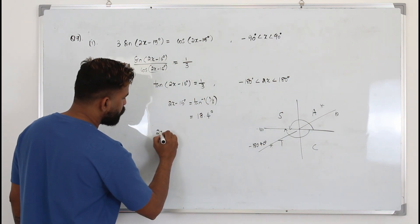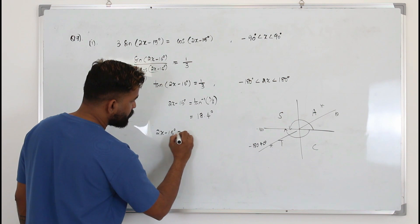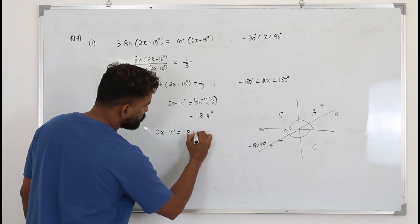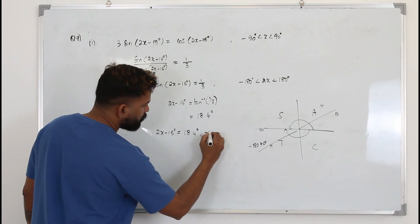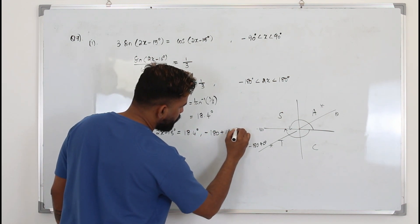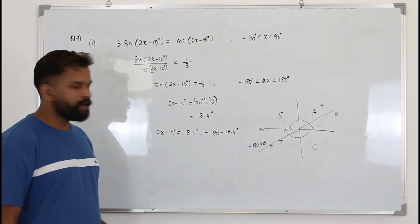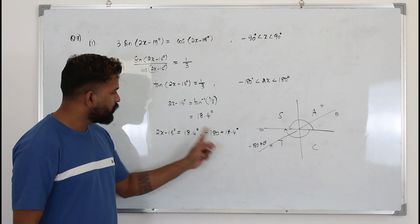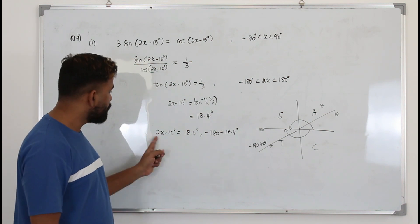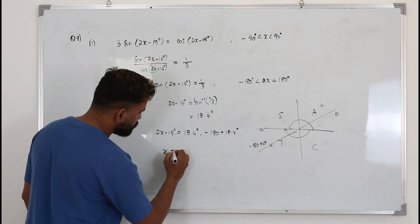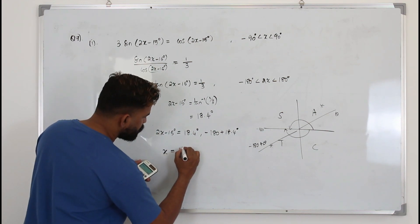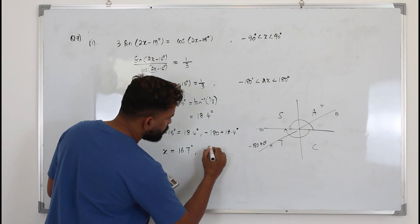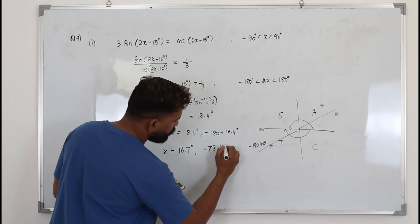So our answer will be: 2x minus 15 degrees equals the principal value, and also minus 180 plus the principal value. That's not the final solution — you need to add 15 to both solutions and divide by 2. So the first value is 16.7 degrees and the second value is negative 73.3 degrees.